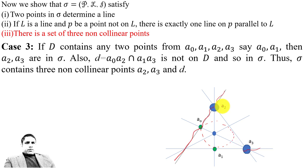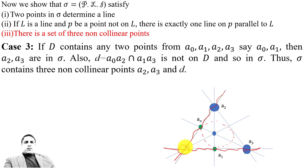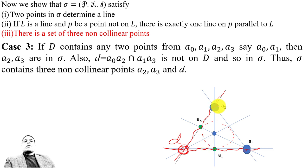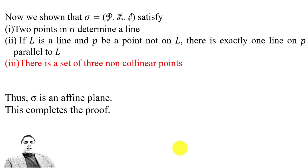પોઇન્ટ દેખાંનો છા — the points are shown. So line a2 and a0, and line a3 and a1 — these lines are indicated. Considering each of these lines, the corresponding intersections and relations are established.